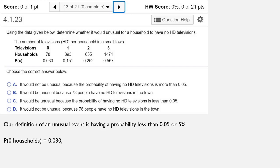the probability of having zero households with an HD television is 0.030. If we took that last zero off, it would just be 0.03. That's less than 0.05.